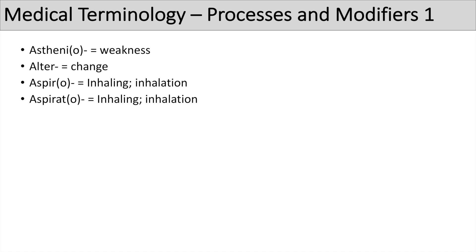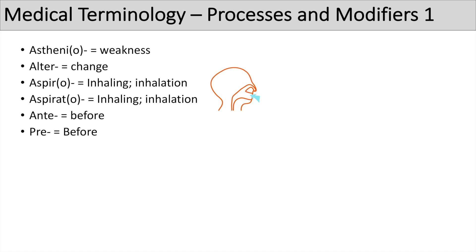Now we're going to look at processes and process modifiers. The prefix 'astheni' or 'asthenio' means weakness. The prefix 'alter' means to change — think of alteration. 'Asper', 'aspiro', or 'aspirate' all mean inhaling or inhalation — think of aspiration. The prefix 'ante' means before, and 'pre' also means before — think of antepartum or pre-partum. And 'post' means after — think of postpartum.